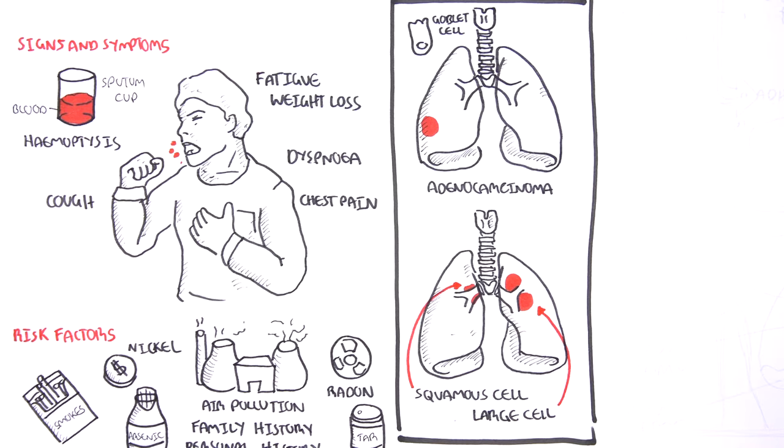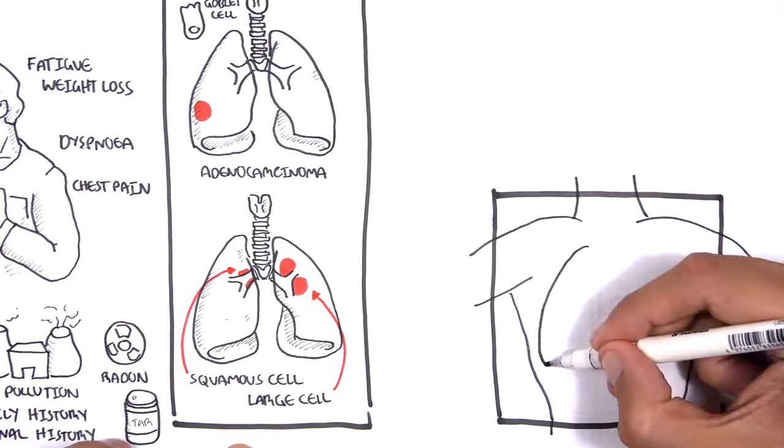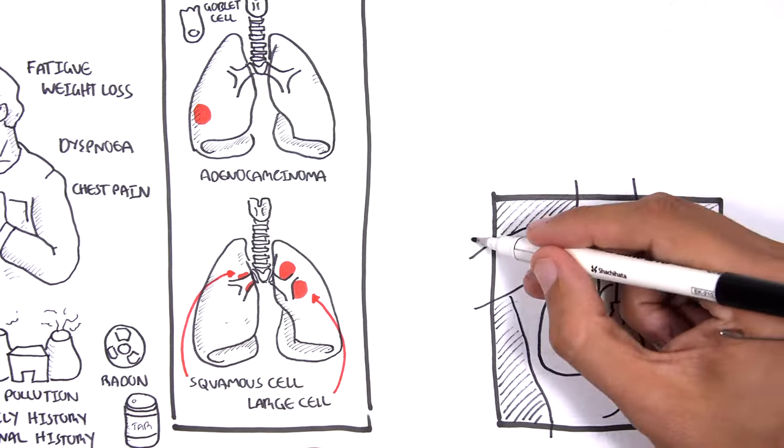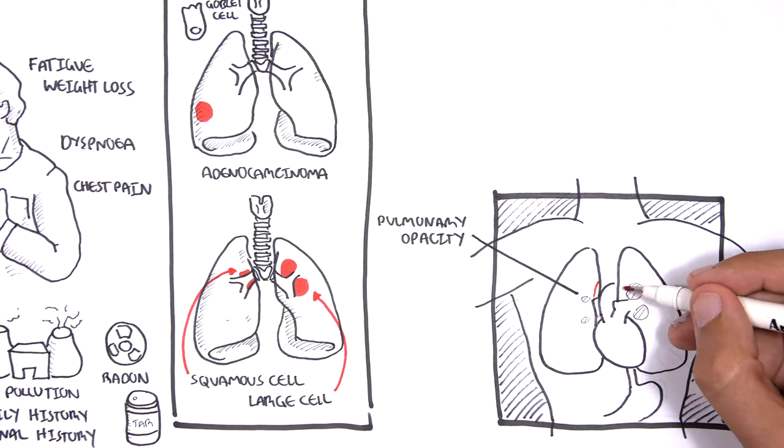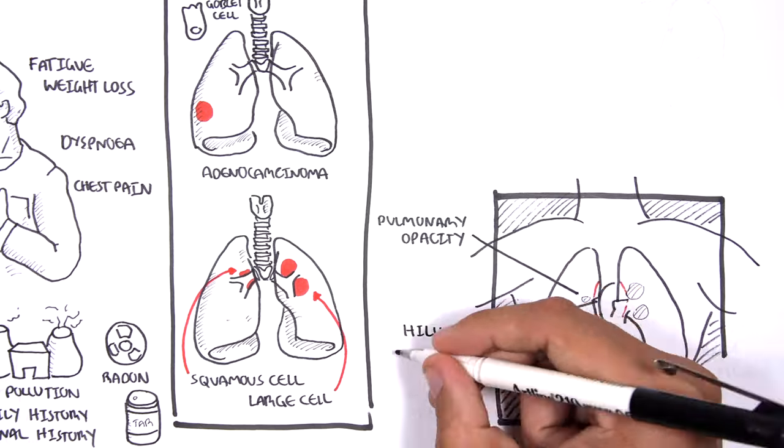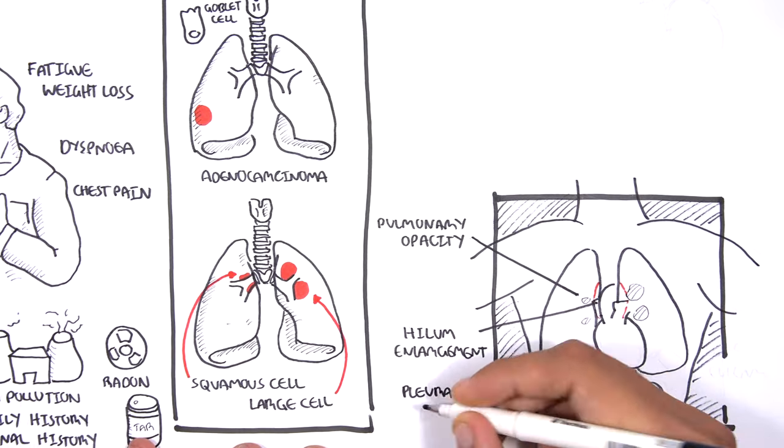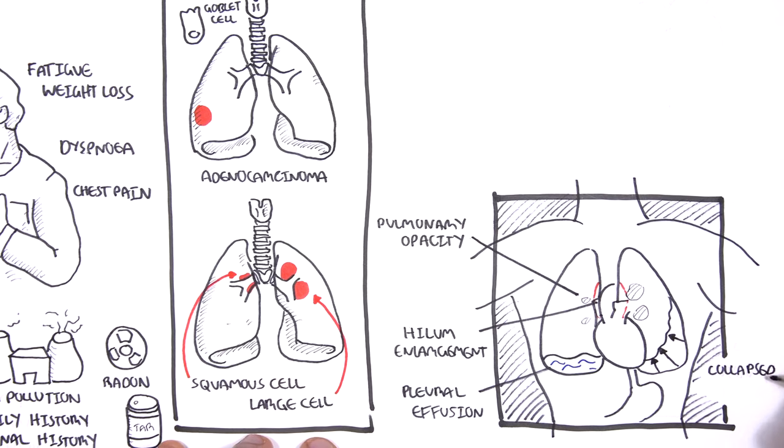If we were to take an x-ray of the chest of a person with lung cancer, here are some things that we could find. One, pulmonary opacity. This shows us the growth itself. Hilum enlargement. There can be presence of pleural effusion, and even a collapsed lung, depending on how big the tumor is.